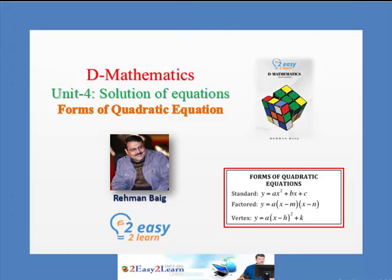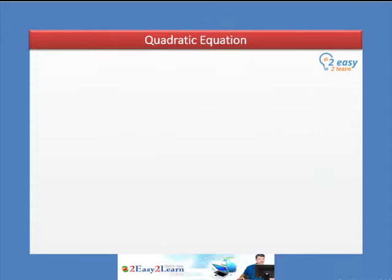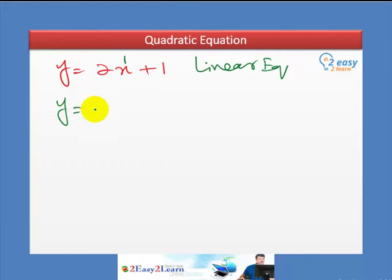Before we discuss the different forms, we must understand what is a quadratic equation. In the previous lesson, we discussed linear equation as y equals 2x plus 1. We call it linear equation because the highest power or exponent of x is equal to 1. But if it is increased to x square, then we call it quadratic equation.